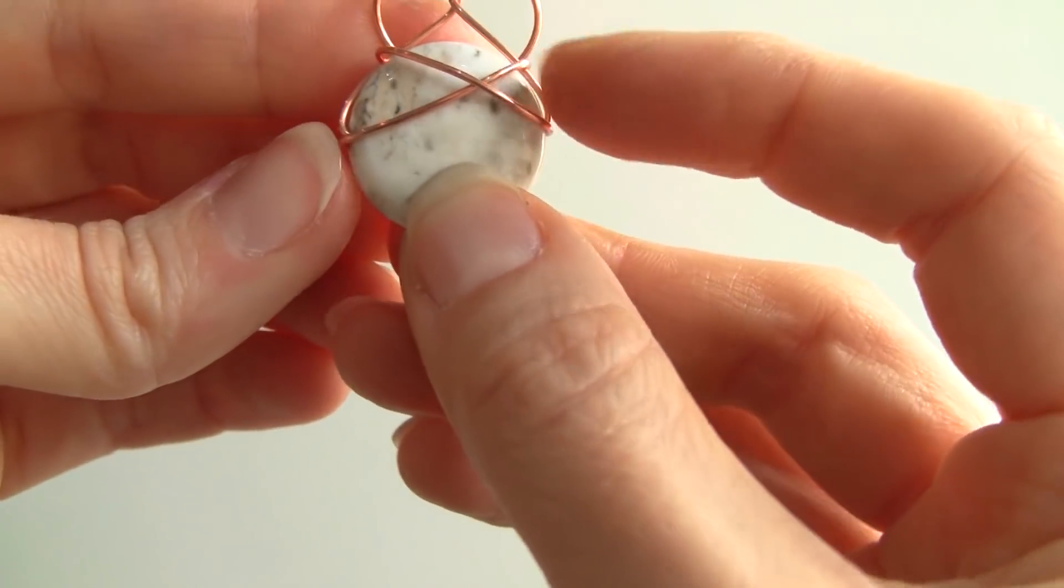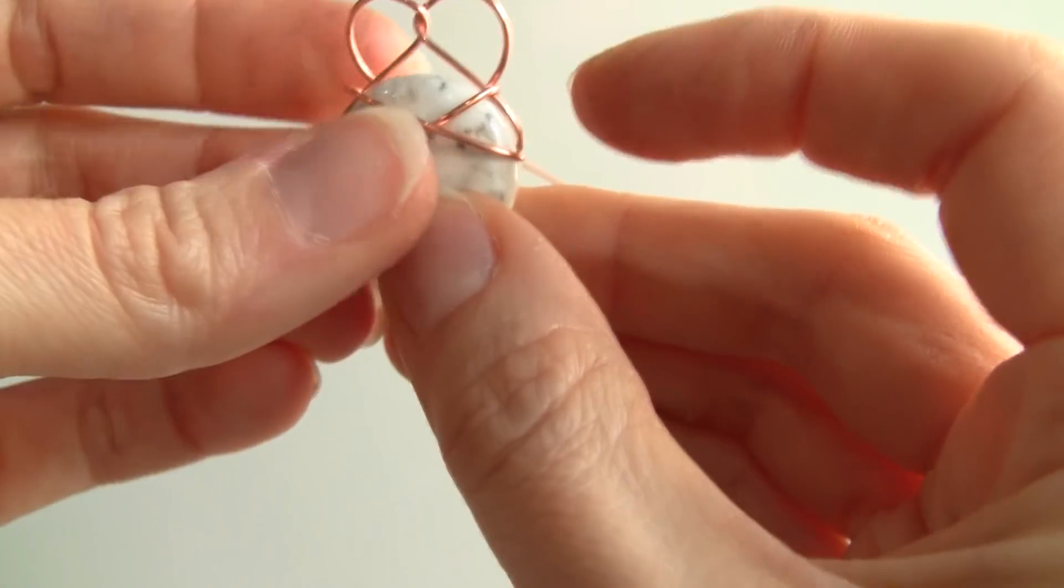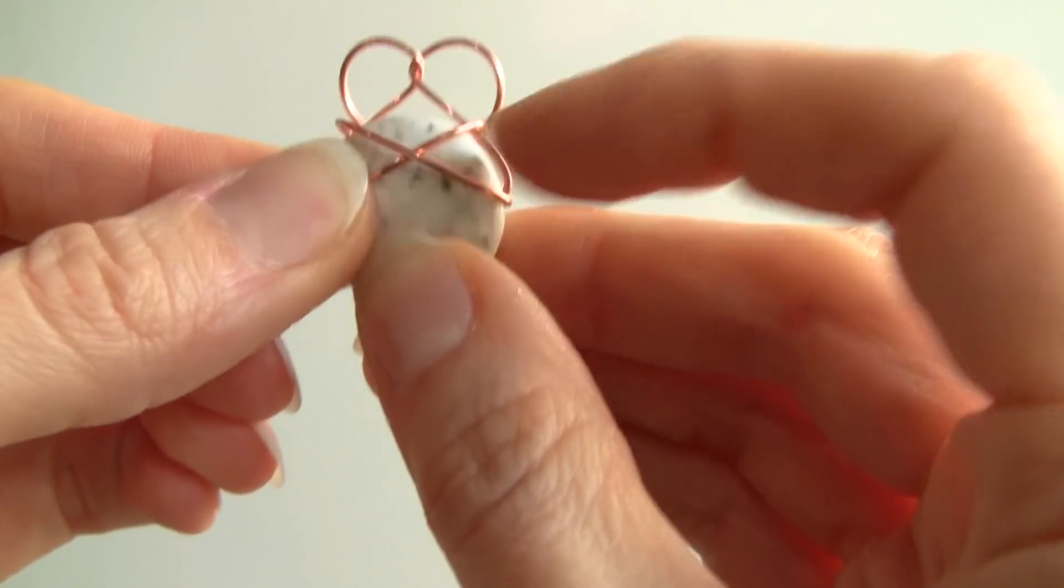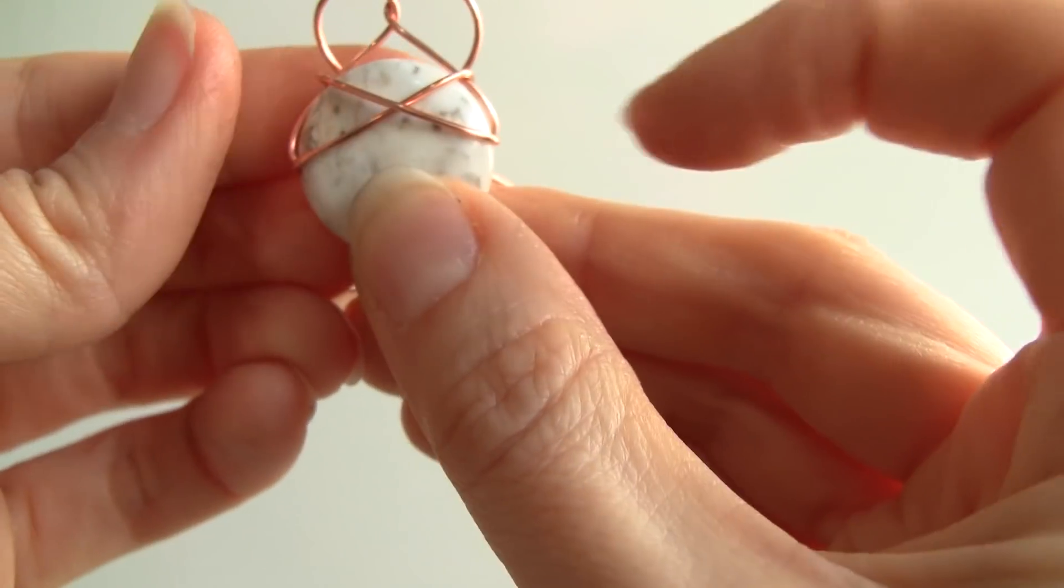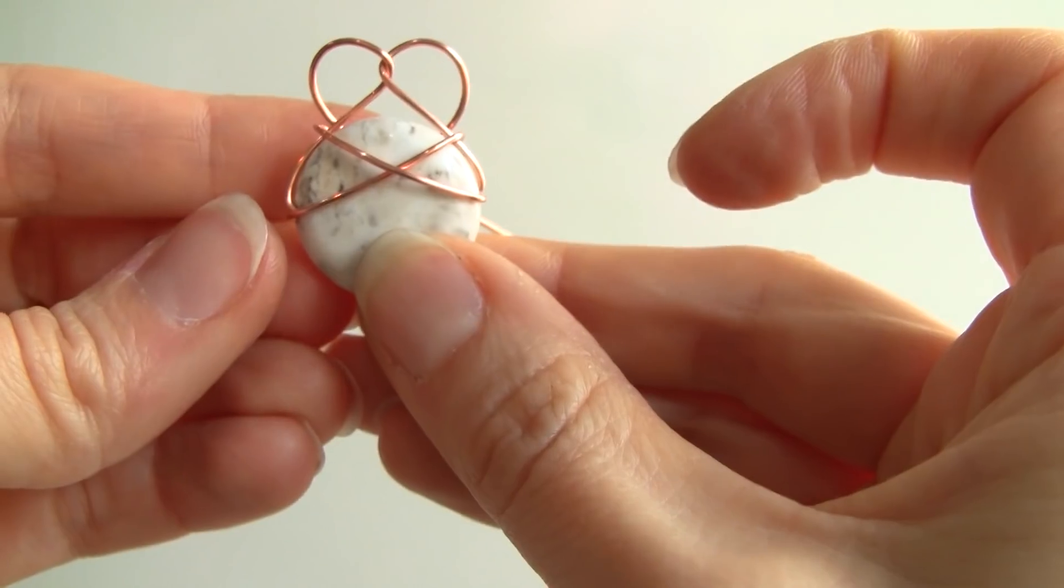So here you can see the little X that got formed is a little bit crooked. So you can kind of play around with that, try to get it to be a little more even.